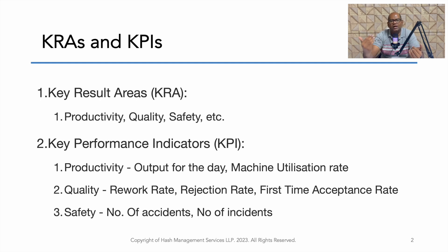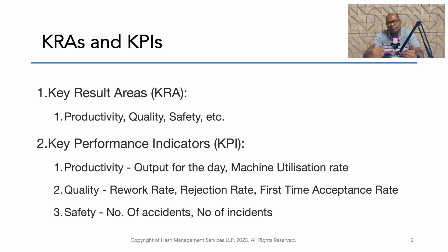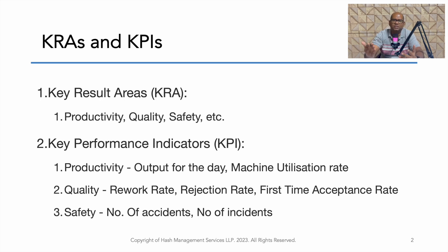Similarly, in a company, in a production department, productivity is one of the key result areas. And how are we going to measure that key result area? That is through KPIs — key performance indicators. For example, for productivity, we have output for the day: what is the planned output versus actual output achieved? That can be a good KPI. Similarly, machine utilization rate can also be a good KPI.